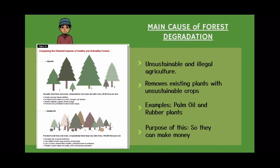How does forest degradation occur? Here are some of the main causes of forest degradation. The first one we have is unsustainable and illegal agriculture, which is removing existing crops in that forest and replacing it with crops that aren't sustainable, such as palm oil plants or rubber plants.